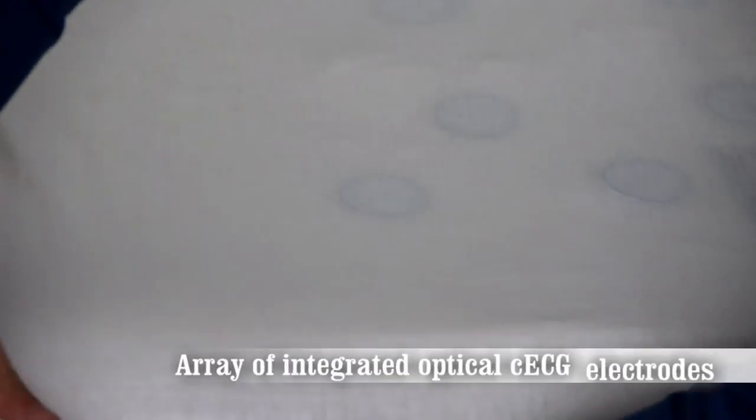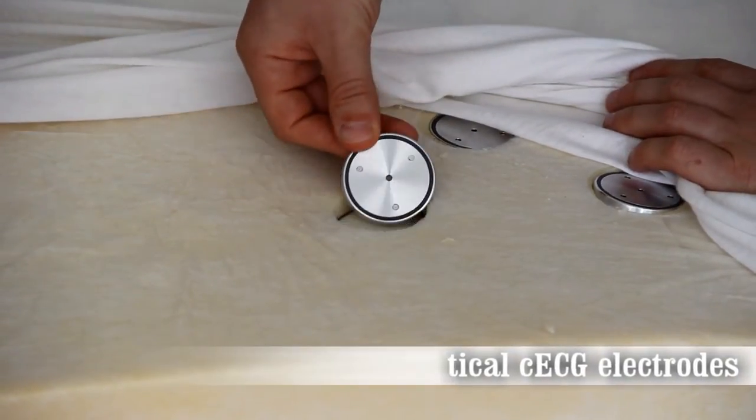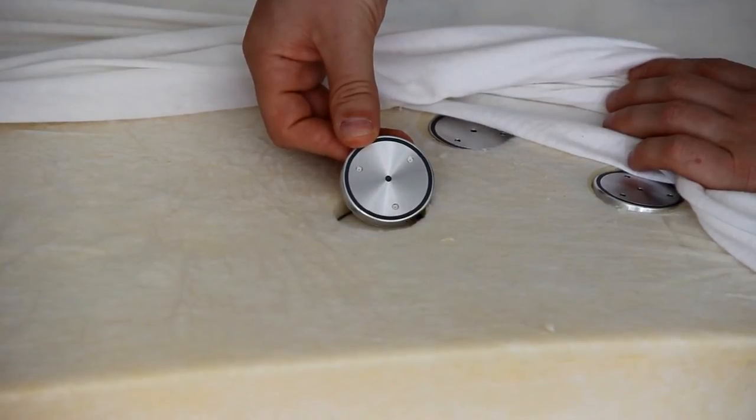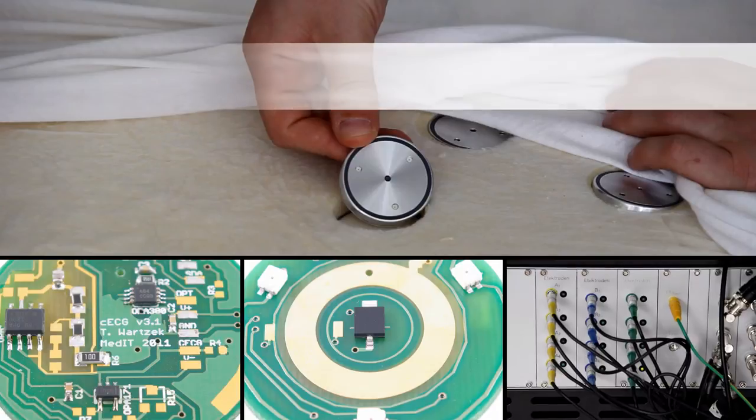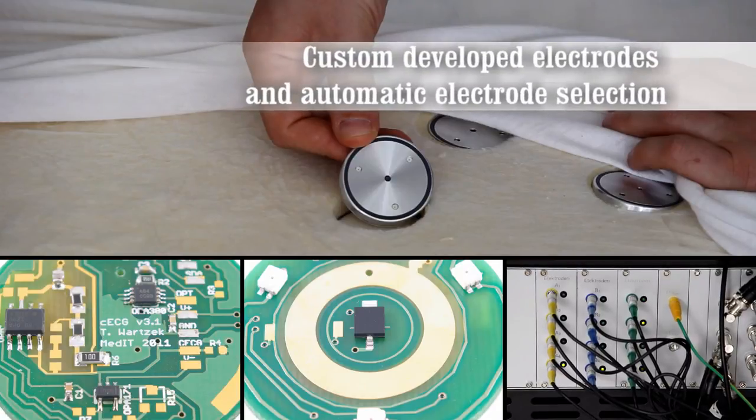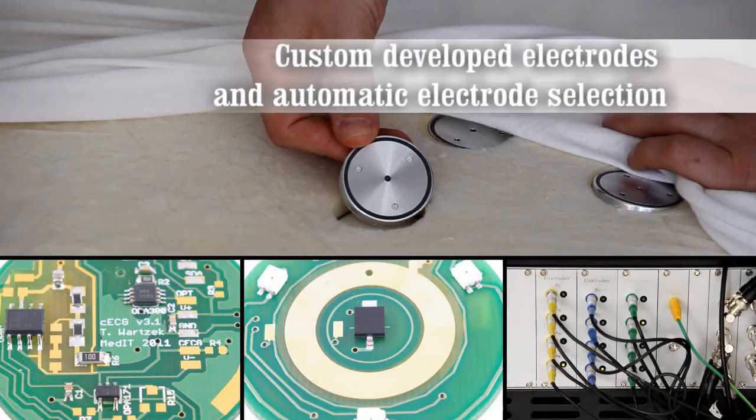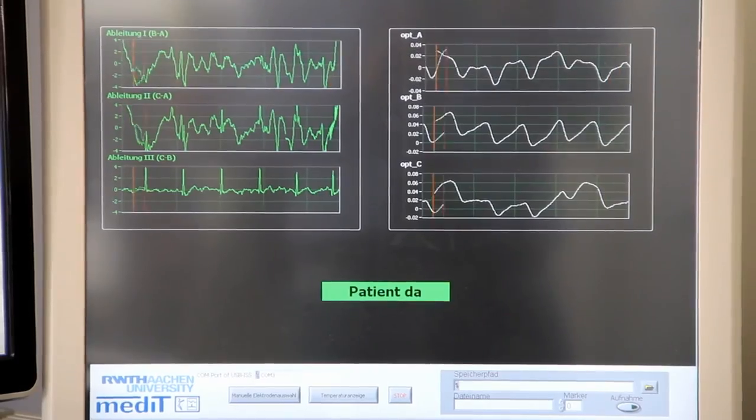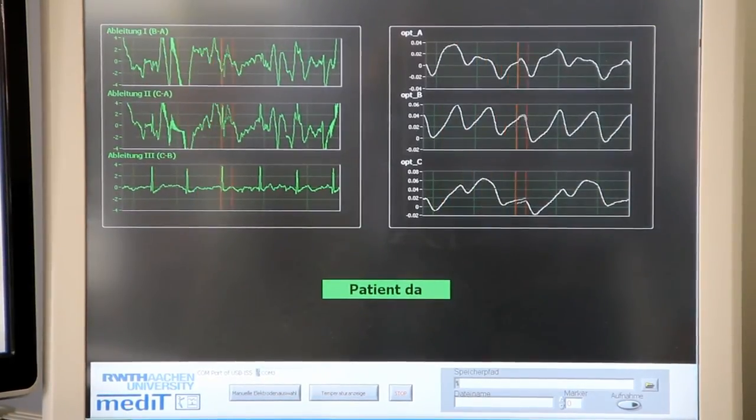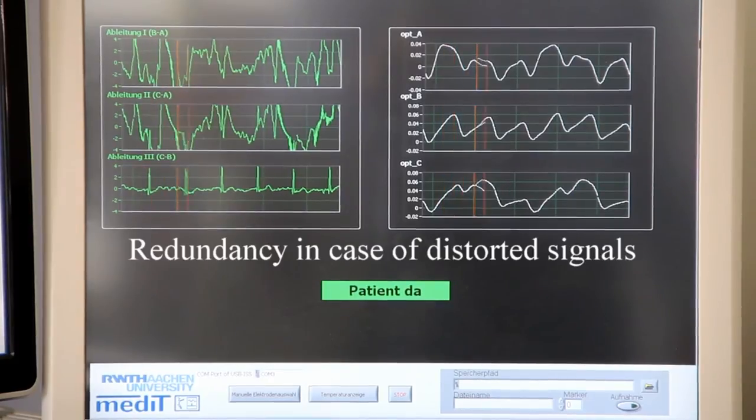In addition to the BCG sensor, an array of integrated capacitive ECG and optical electrodes are used. These custom designed sensors allow ECGs to be measured in a variety of positions through an automatic electrode selection method, which finds the best pairs of electrodes to use at any given time. Besides an ECG, these sensors also record blood pulse signals via infrared sensors integrated into the electrodes.